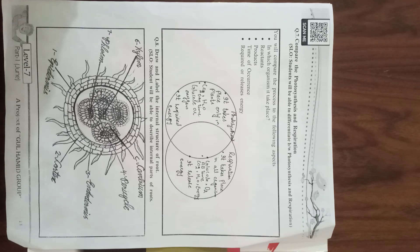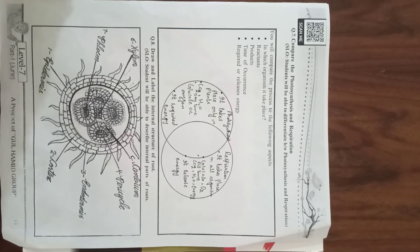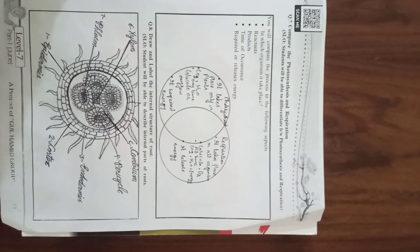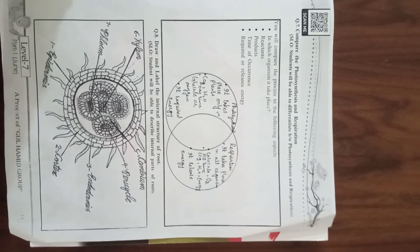Compare the photosynthesis and respiration. As a learning objective, you will be able to differentiate between photosynthesis and respiration. You will compare the processes to the following aspects: in which organisms it takes place. Photosynthesis takes place in plants, while on the other side, respiration takes place in all organisms.